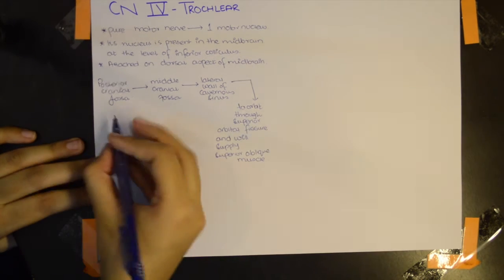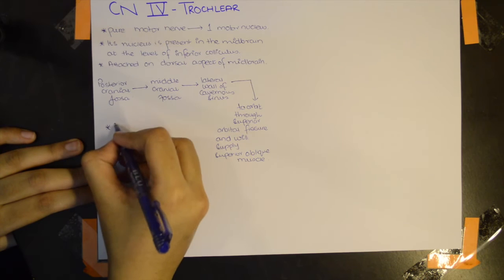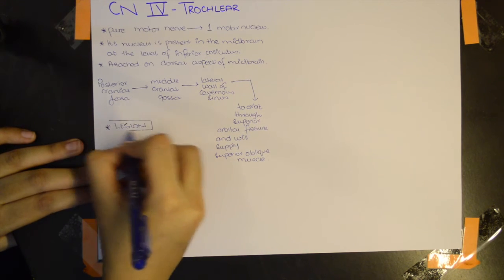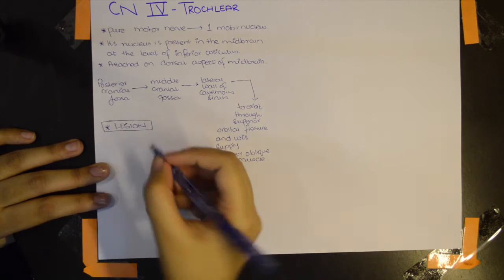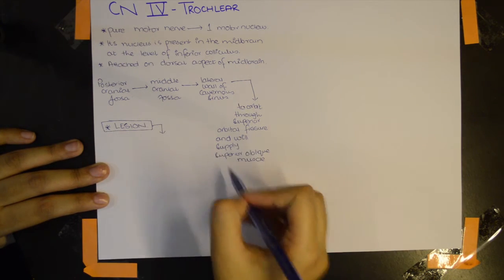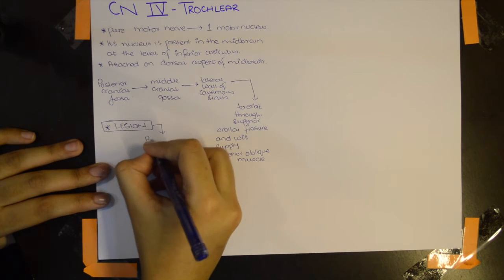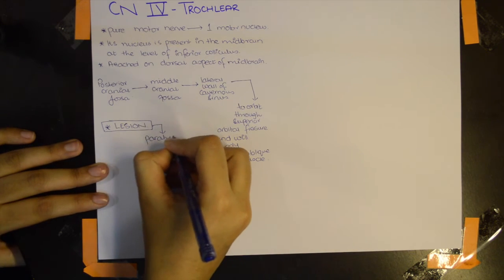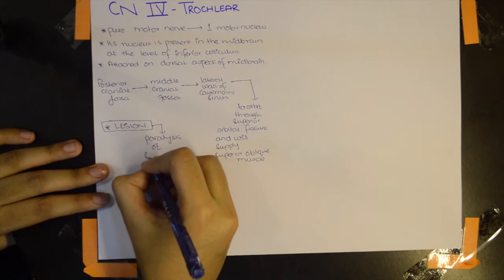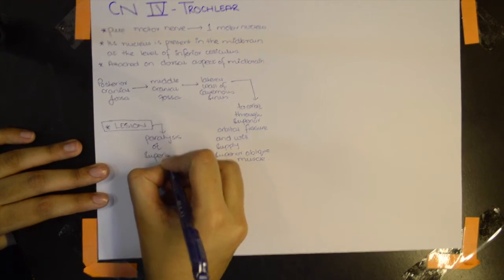Now, what happens if there is a lesion? In the case of a lesion, we'll see that there will be paralysis of the superior oblique muscle, because that is the only muscle it supplies.